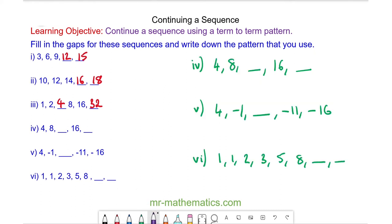For question four, we start at 4 and we add 4 to make 8. We add 4 to make 12, add 4 to make 16, and add 4 to make 20. So our term to term rule is we start at 4 and add 4 each time.